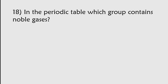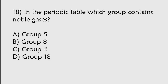In the periodic table, which group contains noble gases? Group 5, Group 8, Group 4, Group 18. The correct answer is option D. In the periodic table, Group 18 contains noble gases.